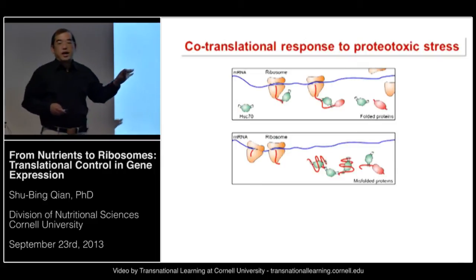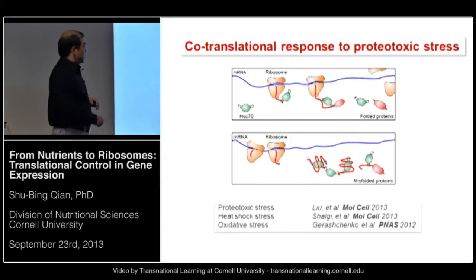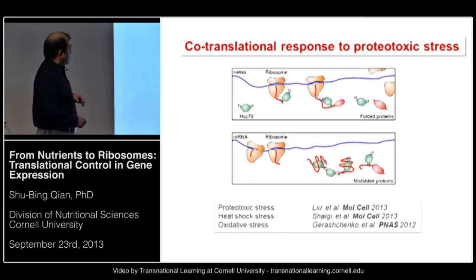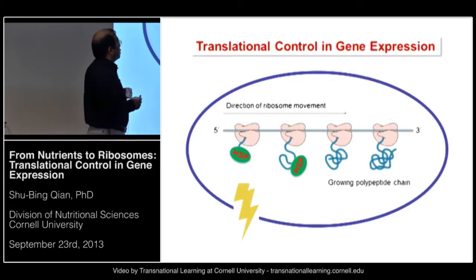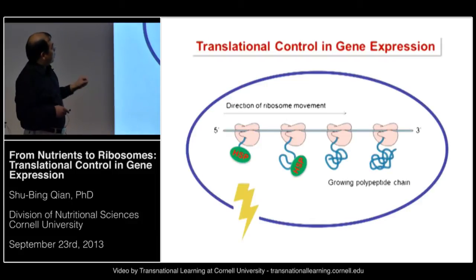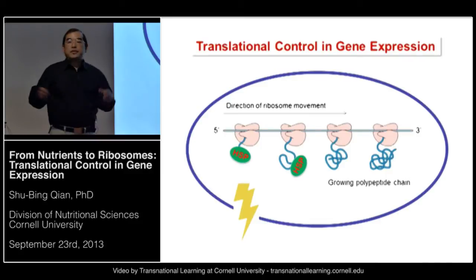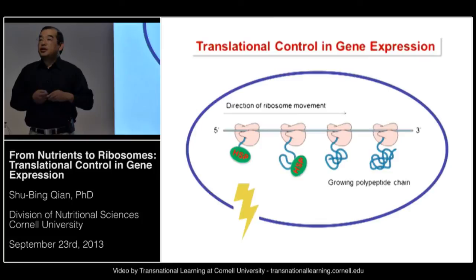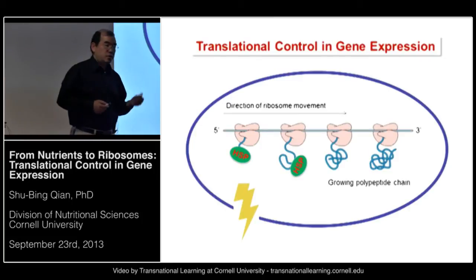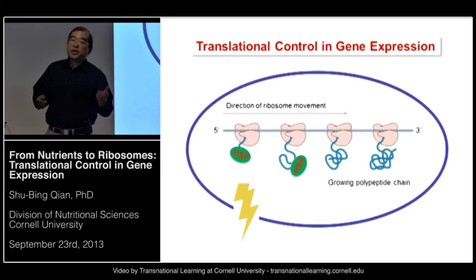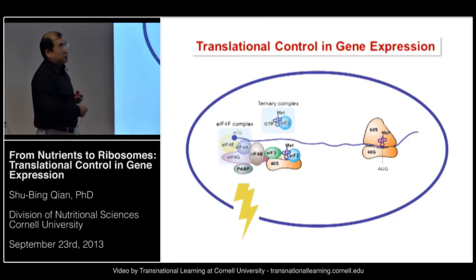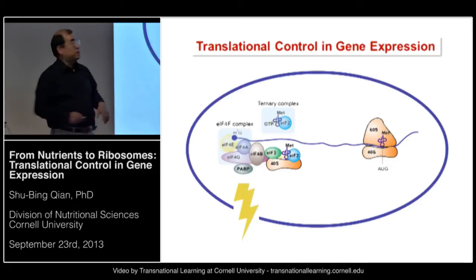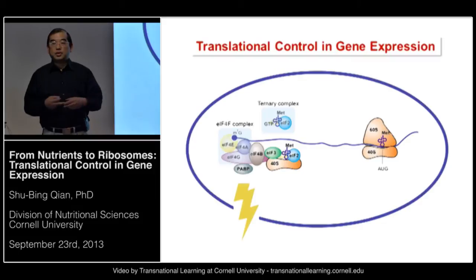Notably, this early ribosome pausing is not limited to proteotoxic stress. A series of other studies reported that heat shock stress and oxidative stress also lead to a similar phenomenon, which gives us a consistent message. This is convincing evidence that translational control in gene expression can indeed occur at the elongation stage — although most well-established translational control mechanisms primarily occur at the initiation stage, such as mTOR controlling cap-dependent initiation by influencing eIF4F complex formation, and various stress conditions affecting ternary complex formation.